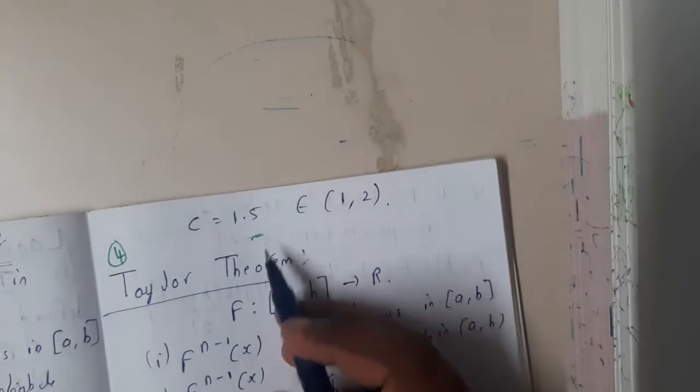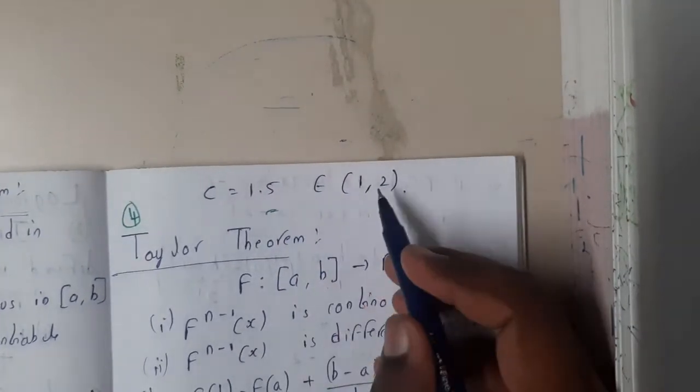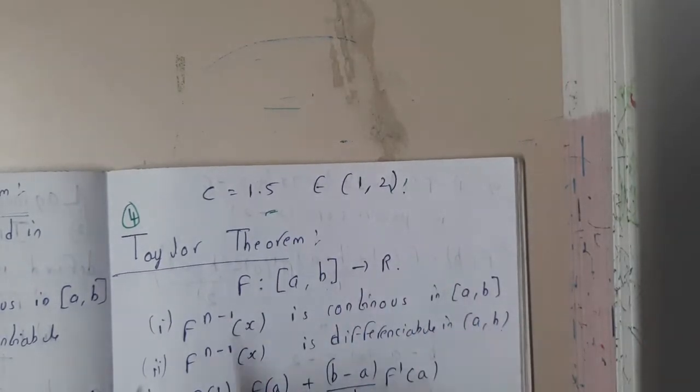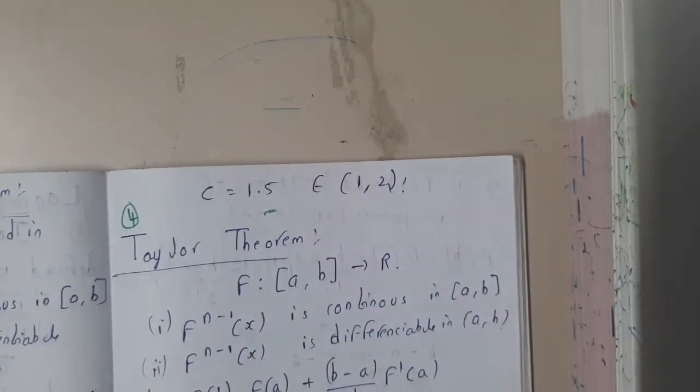So basically 1.5 is inside 1 comma 2, right? Hence our Cauchy's Mean Value Theorem has been proved and this question could be satisfied using it. Make sure that you are going through the theorem once. This is the definition and this is the example. I hope everyone got some basic idea.